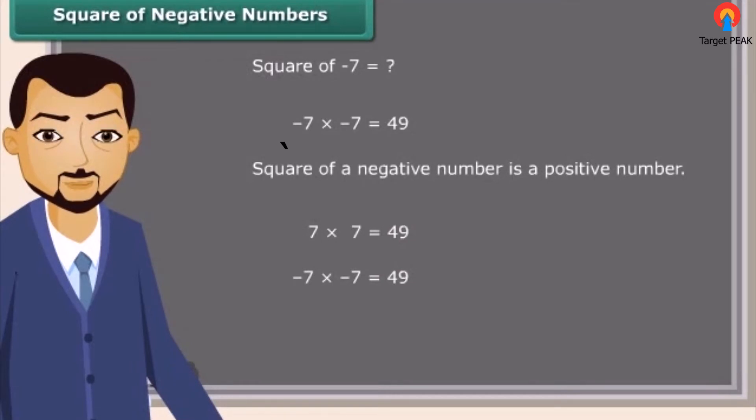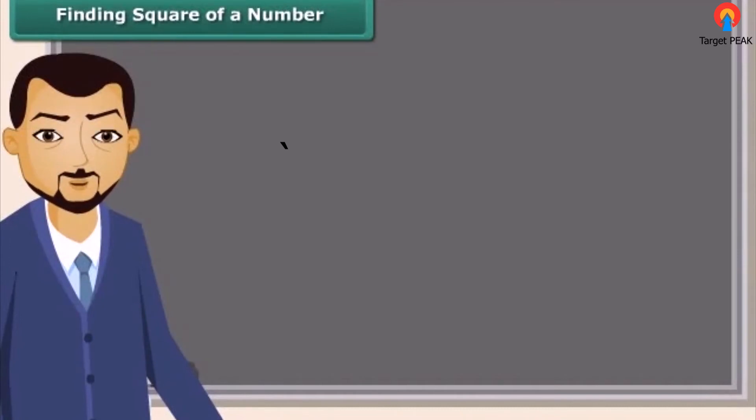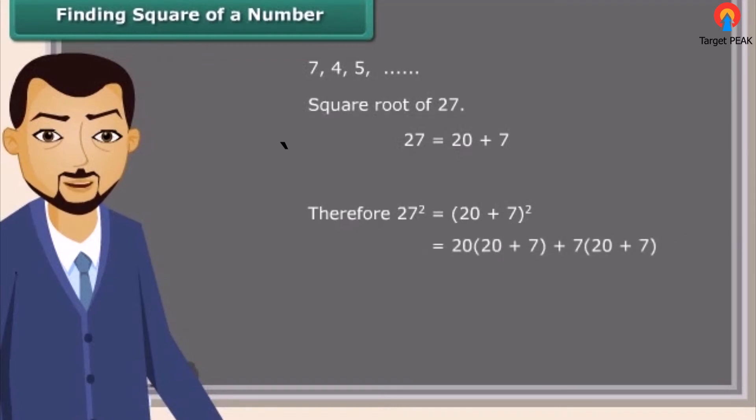Let us know about square roots now. We can easily find the squares of small numbers like 7, 4, 5, etc. But is it easy to find the square of 27 so quickly? Let us find how we may find the square of 27. We know 27 is a sum of 20 and 7. Therefore, a square of 27 is equal to 20 plus 7 whole square, which is equal to 20 square plus 20 into 7 plus 7 into 20 plus 7 square, which equals 400 plus 140 plus 140 plus 49, which is equal to 729.